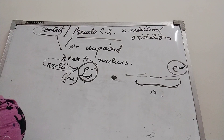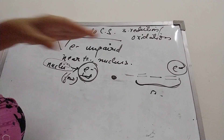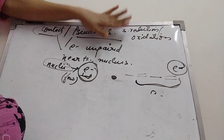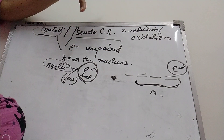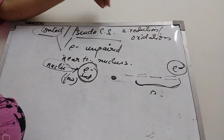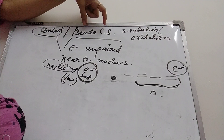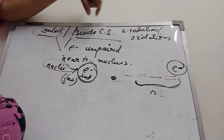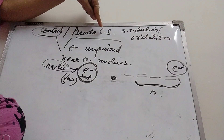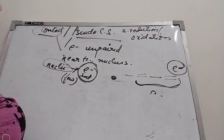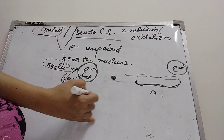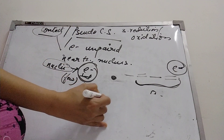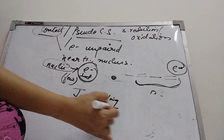In pseudo contact shift, the electrons would not be present near the site of the nucleus — the electron probability density is low when we talk about pseudo contact shift. These shifts are similar to J coupling. The contact and pseudo contact shifts arise because of the coupling of the electron magnetic moment of the unpaired electron of the paramagnetic ion.